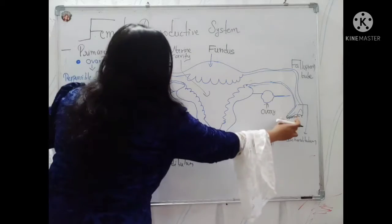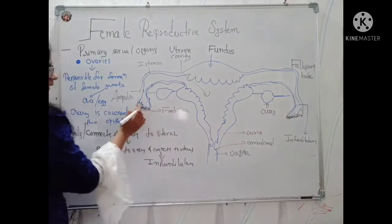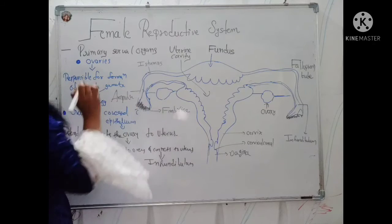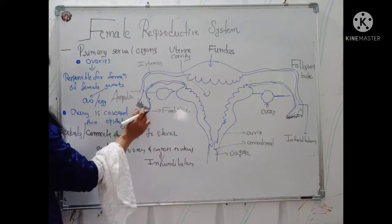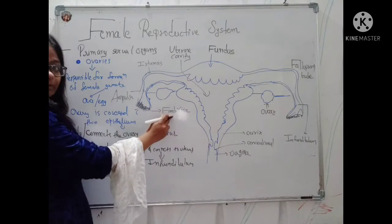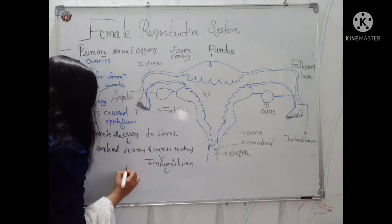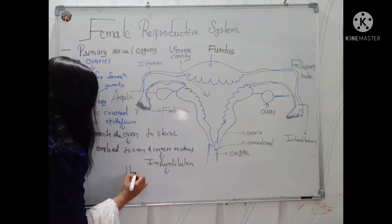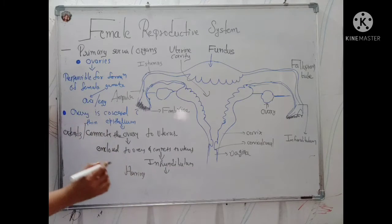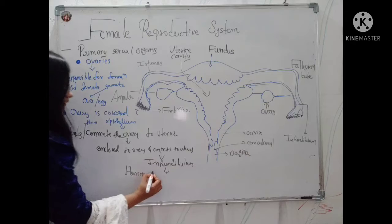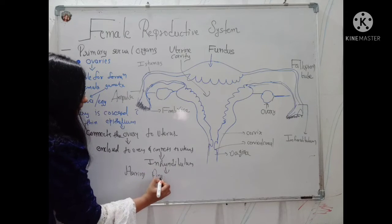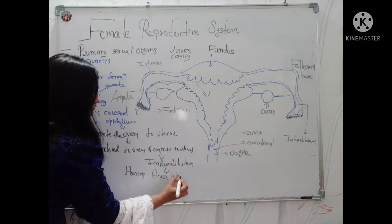This is the infundibulum, and we can see that at the end of the infundibulum there are hair-like or finger-like projections called fimbriae.